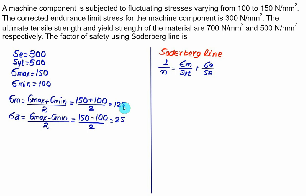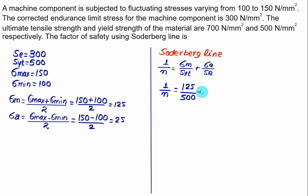Substituting back, we have 1 upon factor of safety equals mean stress 125 divided by SYT 500, plus amplitude stress 25 divided by endurance strength 300. Solving, the factor of safety N comes out to be very close to 3.